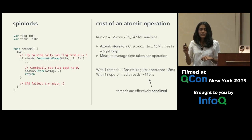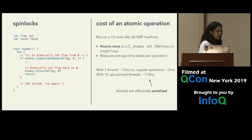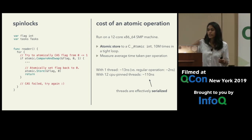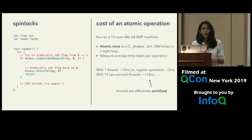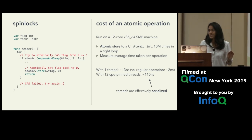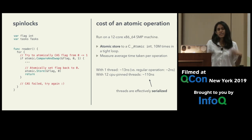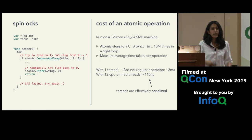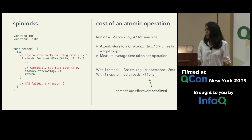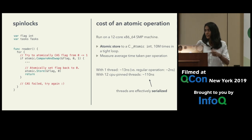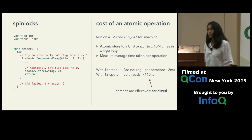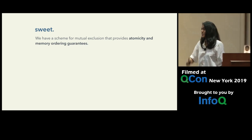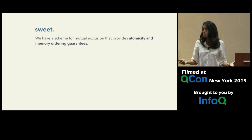So what does this cost us? Let's measure it. Here's a simple microbenchmark in C performing an atomic store 10 million times in a tight loop. With one thread — no contention — it takes about 10 nanoseconds, about 10 times as much as a regular operation. In the contended case with 12 threads, it takes about 12 times as much, which is exactly what we'd expect because these atomic operations effectively serialize our threads. We have a construct that gives us mutual exclusion, atomicity, and prevents memory reordering — and it's pretty inexpensive.